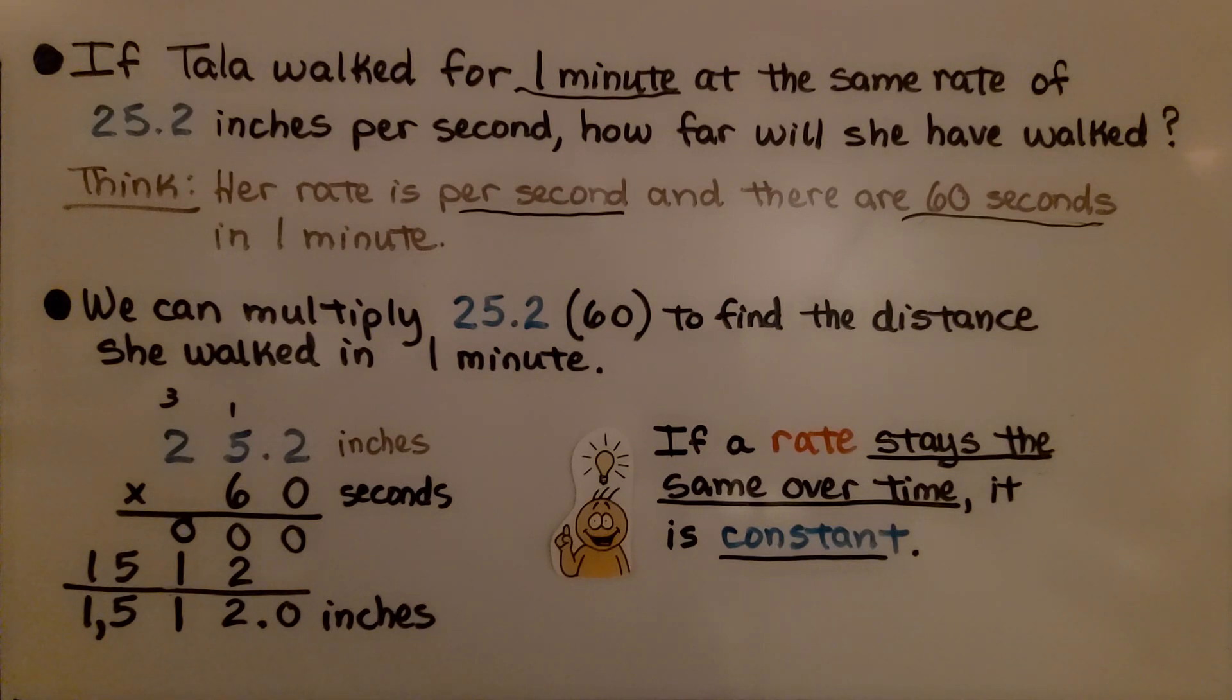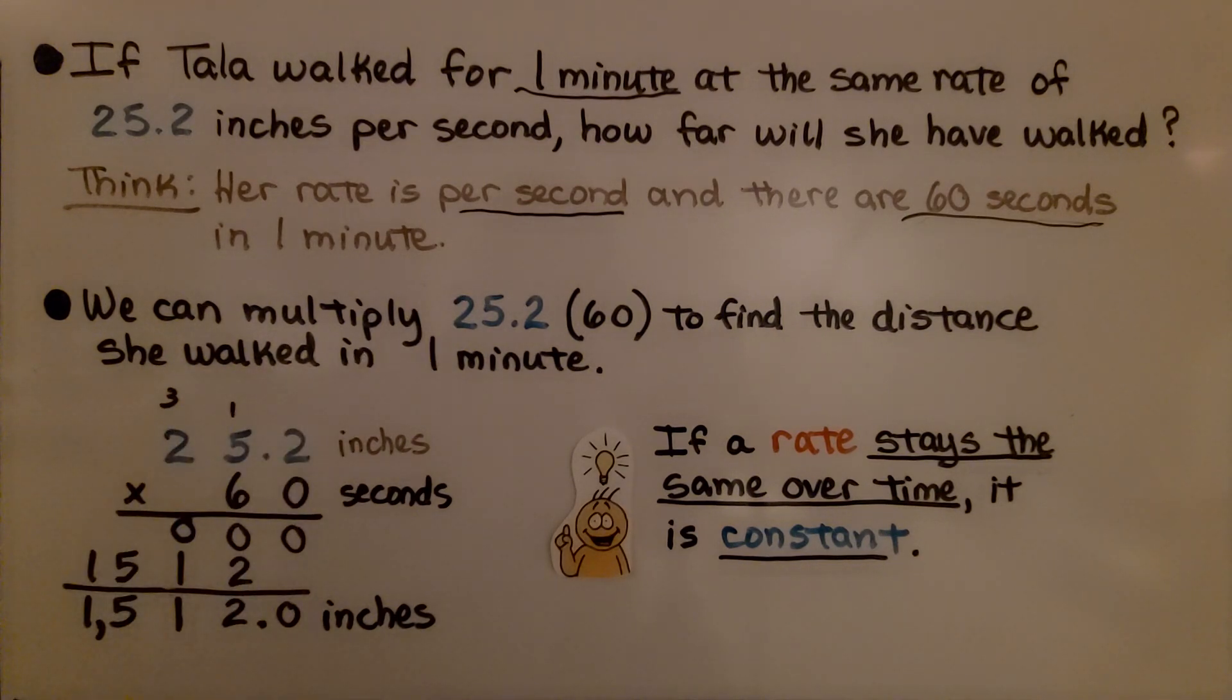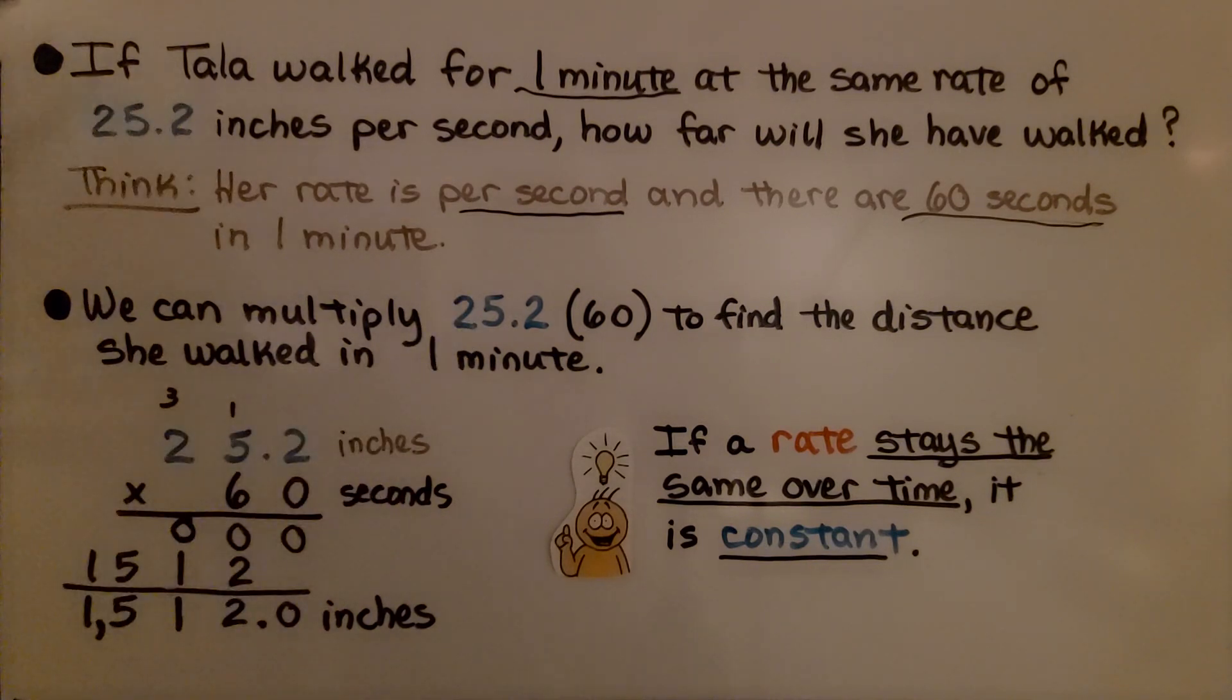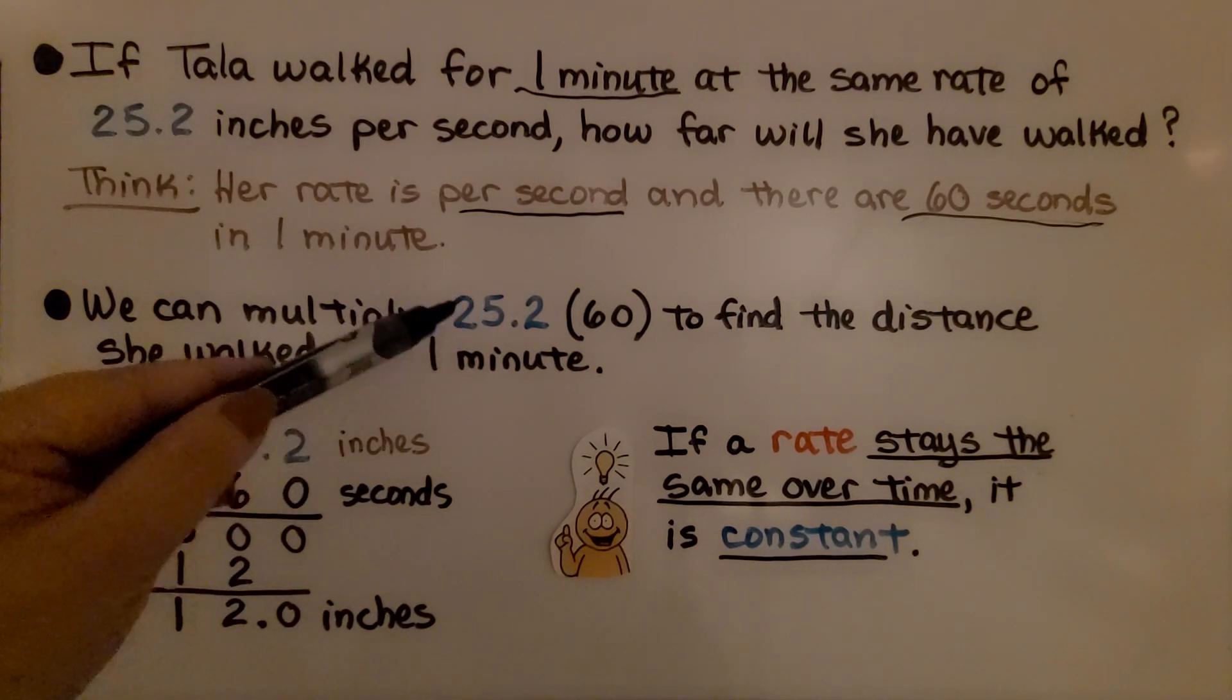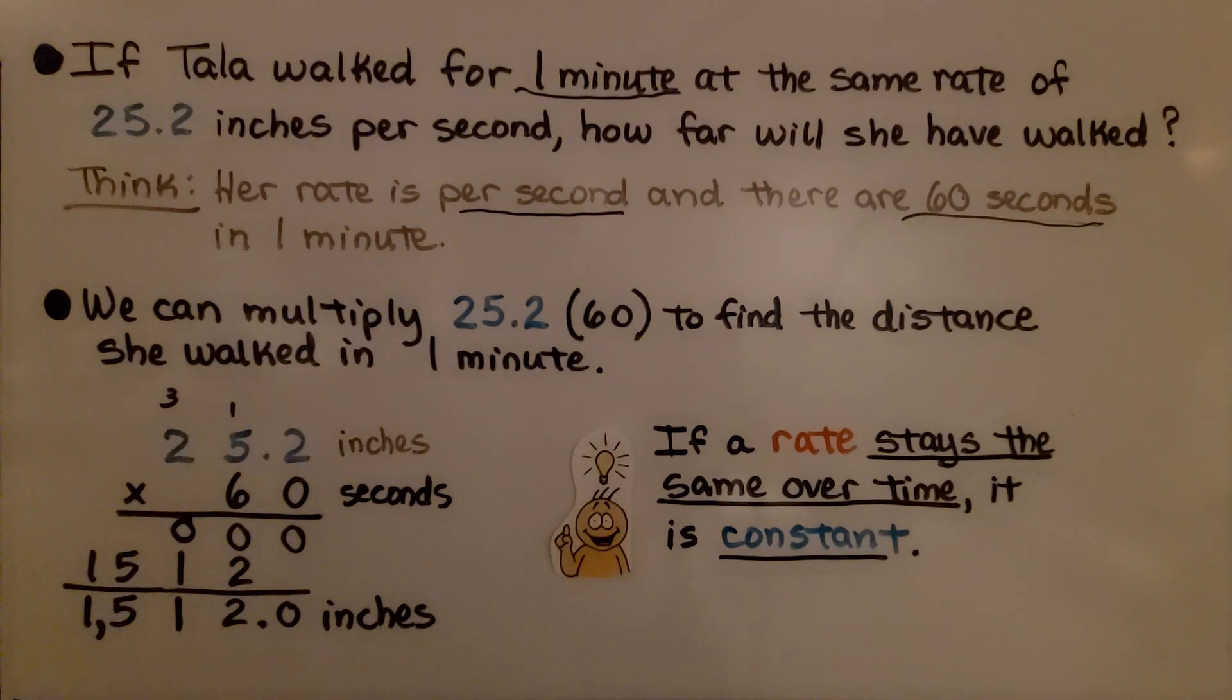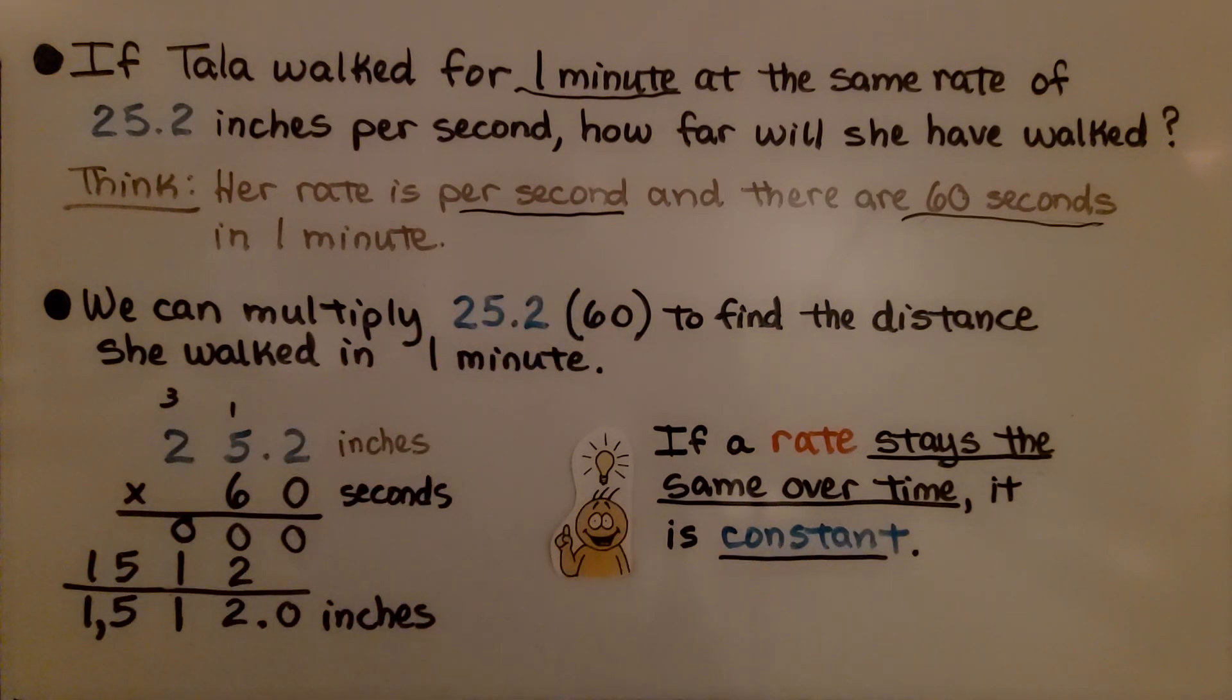If a rate stays the same over time, it is constant. This is a constant rate. Now keep in mind, she can't keep this constant rate forever. Being human, she's going to want to stop to take a break, drink some water, rest, eat. So she wouldn't be able to do this constantly forever. But she might be able to do it for a few minutes.